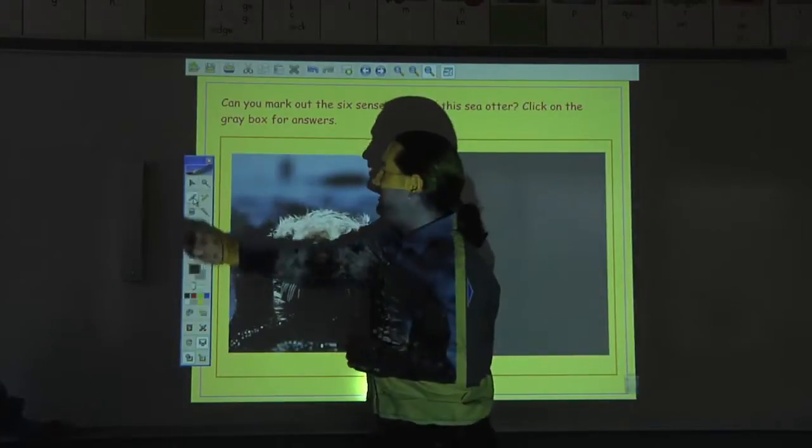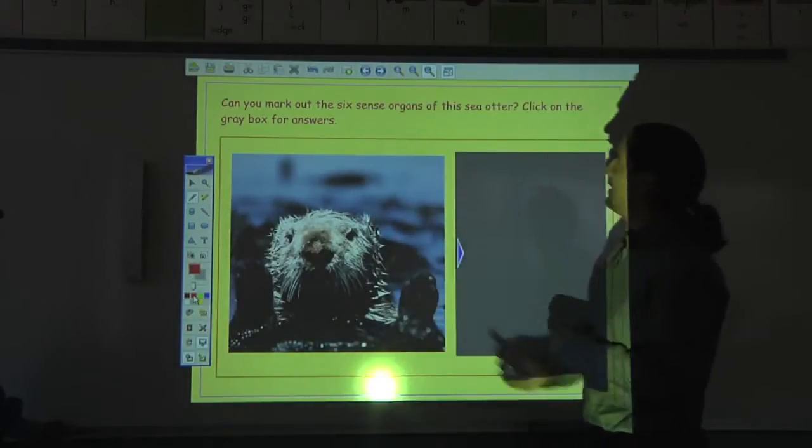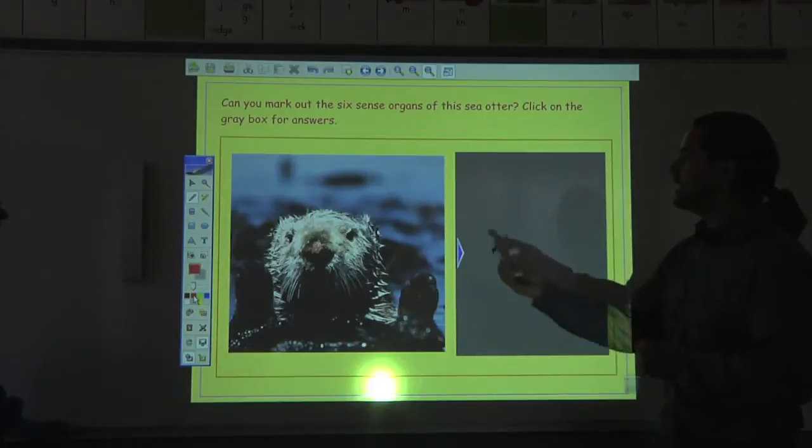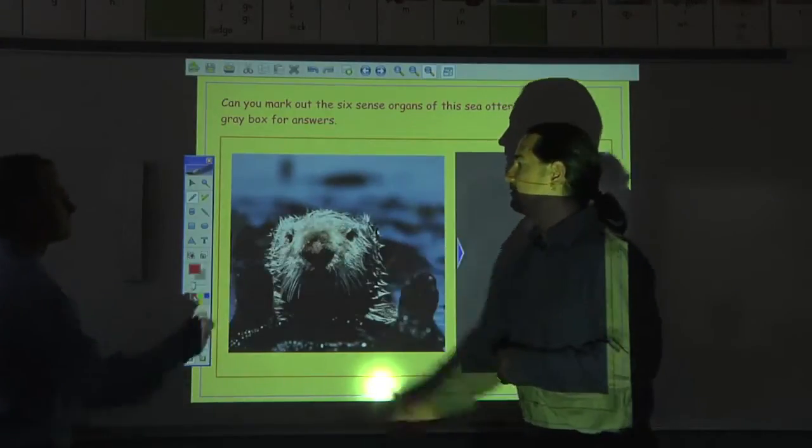And here's another example of activities. I'm going to pick up the pen tool, change it to red. And here we have a sea otter. And what I'd like you to do is annotate and label some of the sense organs. All right.